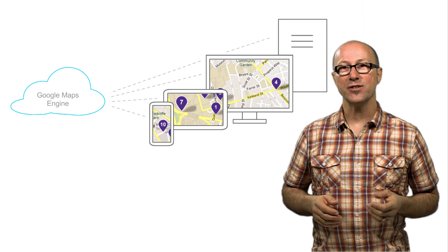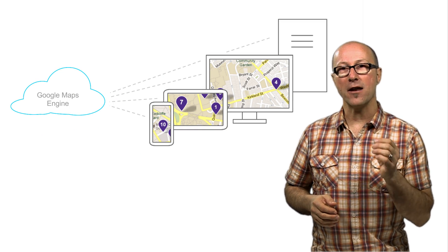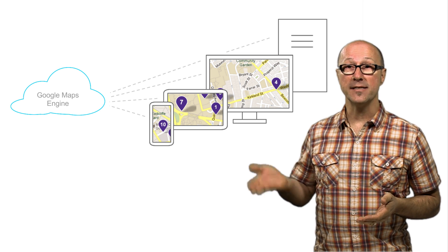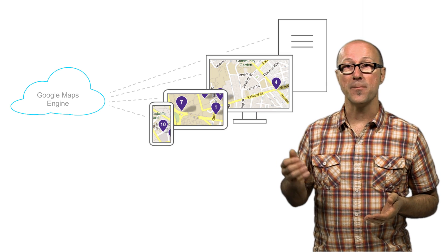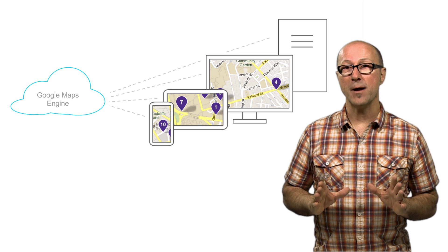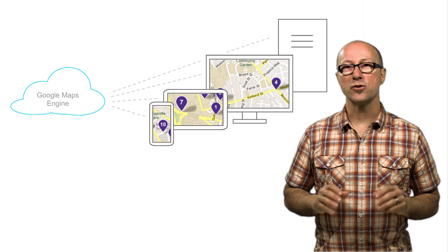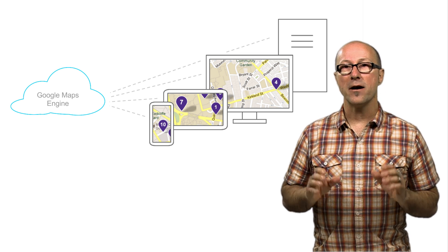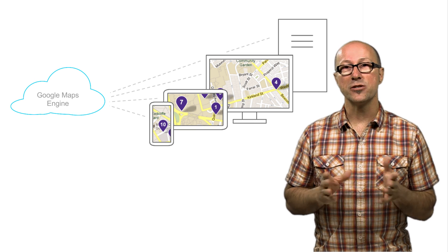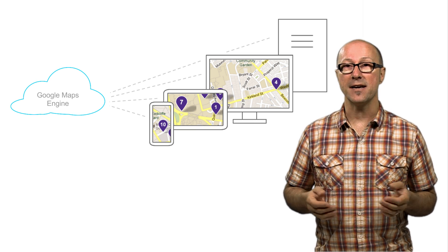Google Maps Engine is a platform for creating, sharing, and hosting maps in Google's cloud. You can start by uploading data into the cloud. Once the data is hosted on Google Maps Engine, you can define styling rules to craft how it looks on the map, and either make it public or set permissions to determine who can see and/or update the data.